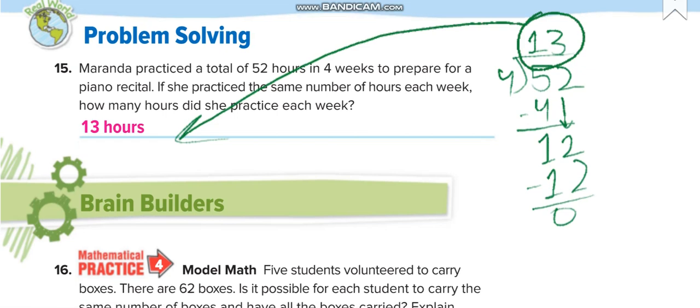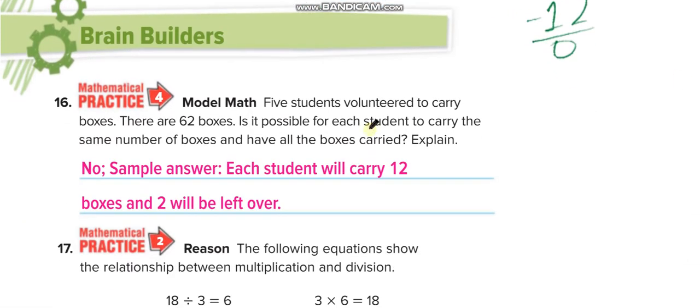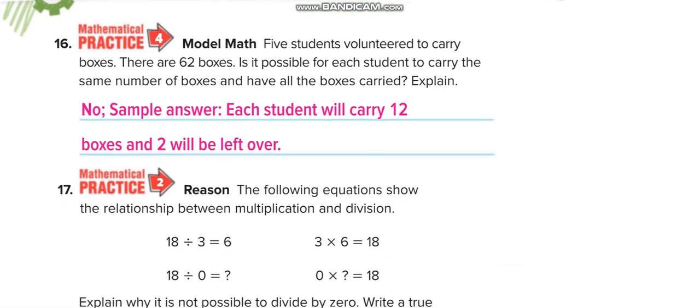Next one. Five students wanted to carry boxes. There are 62 boxes. Is it possible for each student to carry the same number of boxes? Like if we divide 62 with 5, we will get a remainder of 2. So two students will take two extra boxes.